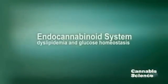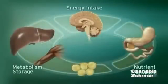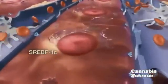In the liver, ECS stimulation can lead to lipogenesis through the activation of hepatic lipogenic enzymes and increased fatty acid synthesis. Chronic stimulation of the ECS is associated with dyslipidemia. Activation of CB1 receptors increases expression of SREBP1C, a lipogenic transcription factor, and increases fatty acid synthesis.